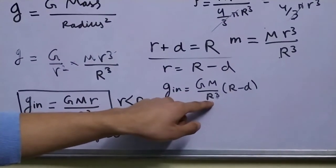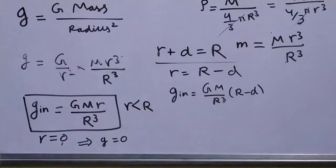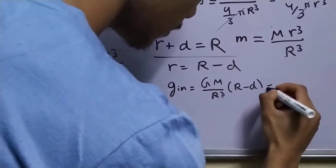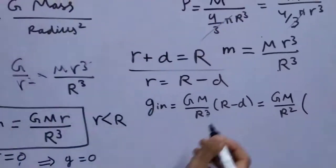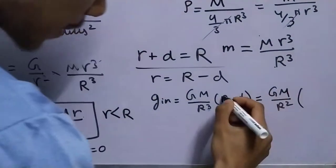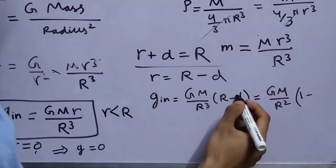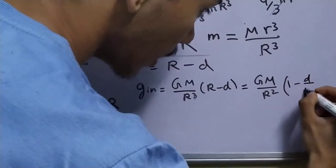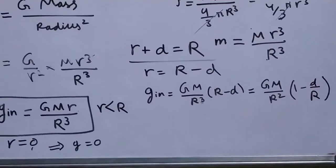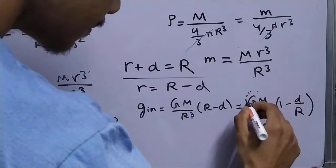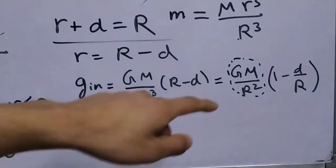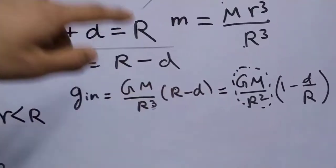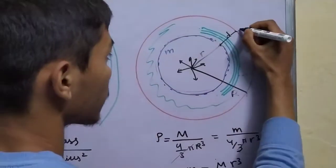I want you to take only 1 r into the bracket leaving r square behind. So you're left with G m over r square times r divided by capital R, which gives 1 minus small d by r. And this term is nothing but the gravitational field intensity at the surface of this planet right here.